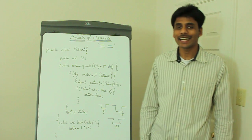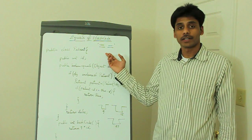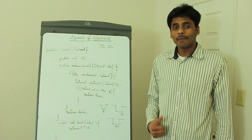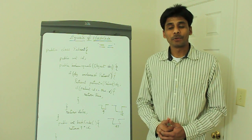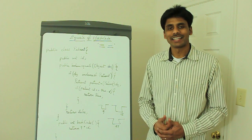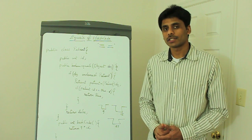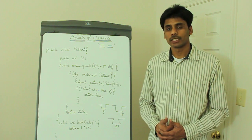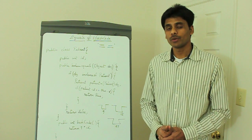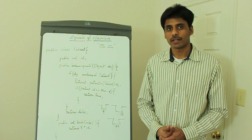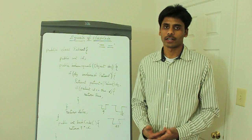Let's look at the double equals operator in Java. When you use it to compare two primitive types like integers or double, it checks if the values of these primitive types are the same and returns true if the values are same, and returns false if the values are not same.